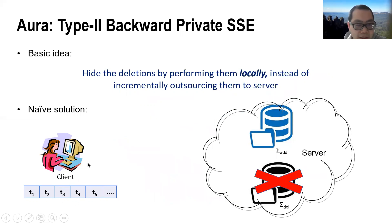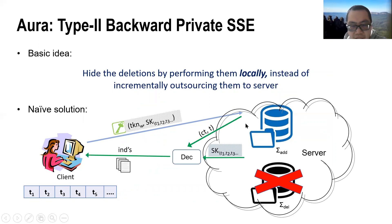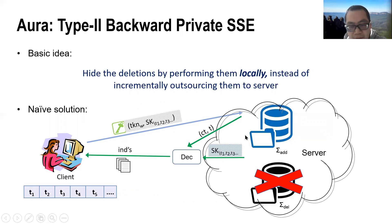When performing a search query, the client first generates a punctured secret key for the recorded tags by repeatedly running the puncture algorithm, then sends it together with the token to the server. The server, with the token, can retrieve all the ciphertexts matching the query. After that, the server uses the punctured secret key to decrypt each ciphertext and returns the non-deleted documents. From this process, we can see that the server cannot learn which deletions happened and which deletion removes which insertion.